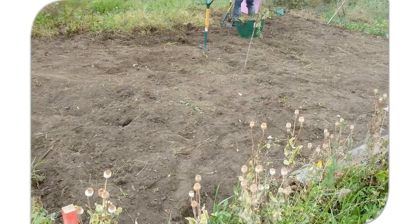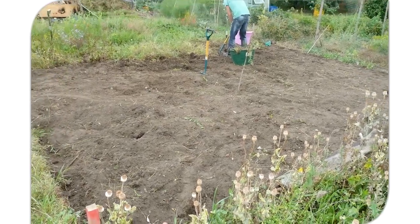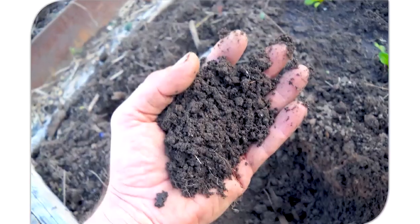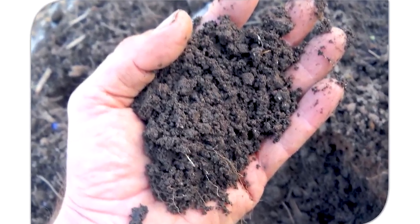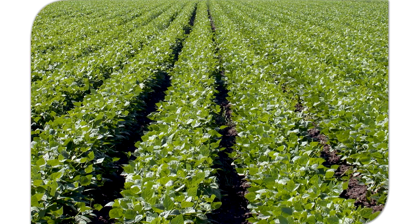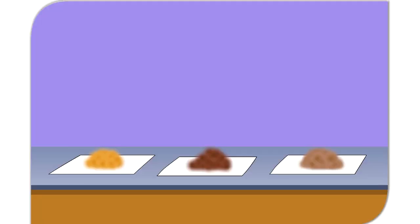Loamy soil: it contains equal amount of sand, clay, silt, and humus. It has the right water holding capacity and has adequate air spaces between the particles. It is considered the best soil for growing crops.